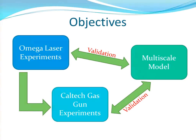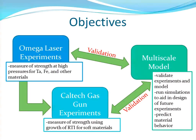These are the different components of my research. I'll talk about the Omega laser experiments and then some Caltech gas gun experiments that we've performed. Both of those are used in coordination with a multiscale model that we're using to validate the model, and the model is used to validate the experiments. For the laser experiments, we're trying to measure strength of different materials — mostly tantalum, but a little bit with iron as well.